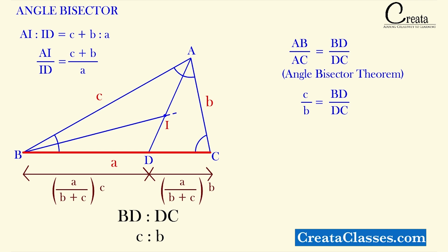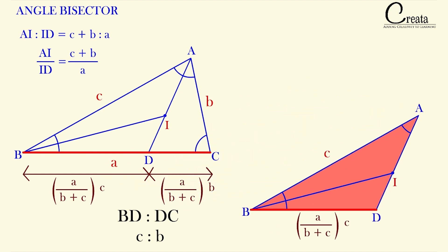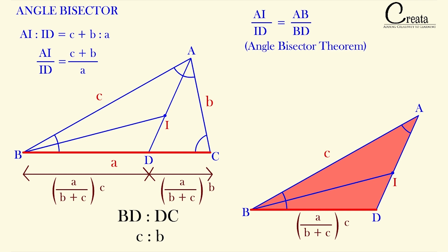Let's consider triangle ABD with BI as the angle bisector. Isolating this triangle: AB = c (as given), and BD = (a · c) / (b + c) as just calculated. Applying the angle bisector theorem to triangle ABD, we get AI : ID = AB : BD.